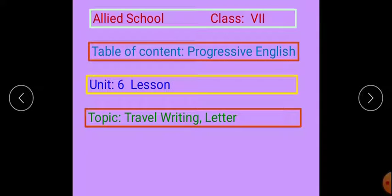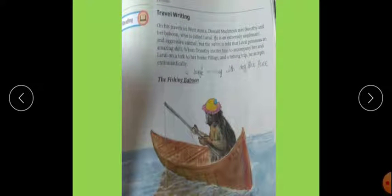This is the 24th lecture of your Progressive English Unit 6 Lessons. Today our topic is Travel Writing and Letter. Open your book on page number 153.